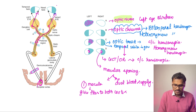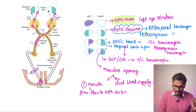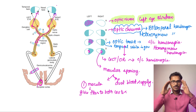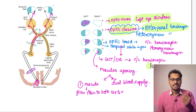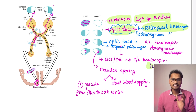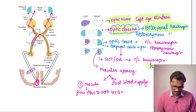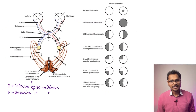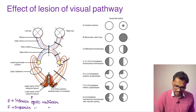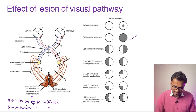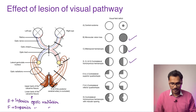To revise: a lesion in the optic nerve causes ipsilateral blindness. A lesion at the optic chiasma causes bitemporal hemianopia. After the optic chiasma, lesions cause contralateral hemianopia, which is a type of homonymous hemianopia. The special feature of optic radiation lesions is macular sparing.